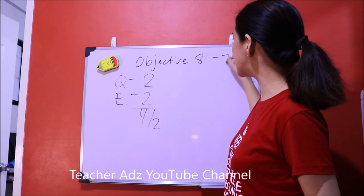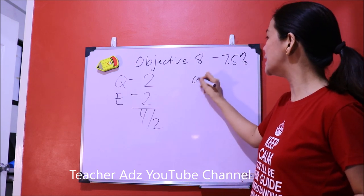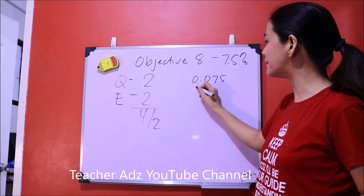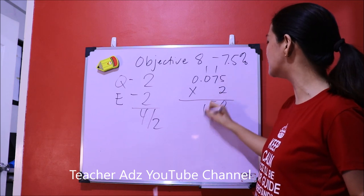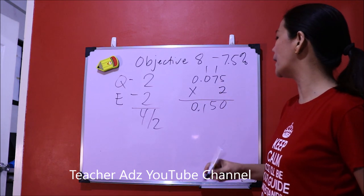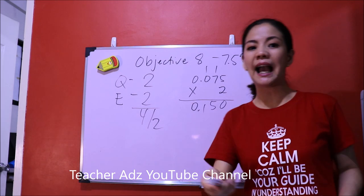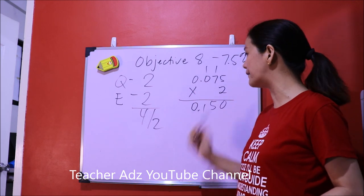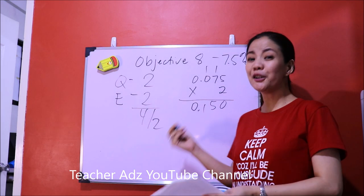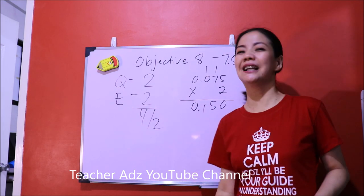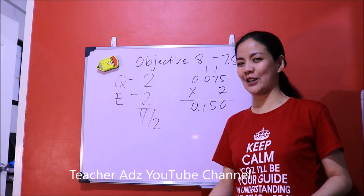Objective 8 has a weight of 7.5%, so 0.075 multiplied by 2 equals 0.150. That is the weighted rating of the highly proficient teacher for Objective 8. That is how the rating is computed for Objective 8 for the highly proficient teacher. It is easy to compute, but it is important to carefully check the documents — make sure the FGD or LAC submitted actually addresses Objective 8. If a document does not address the objective's indicator, it is not a valid document.